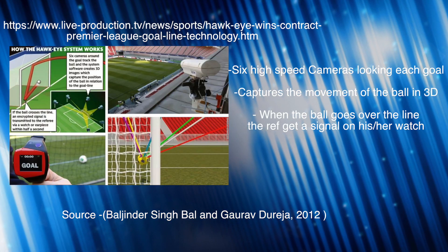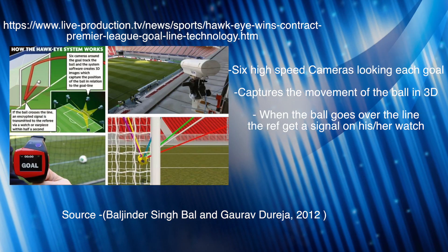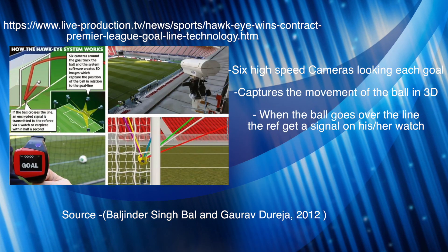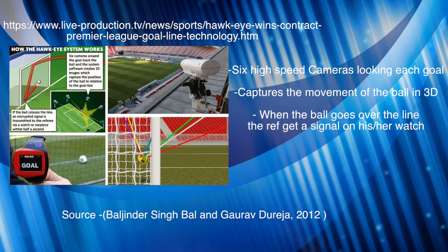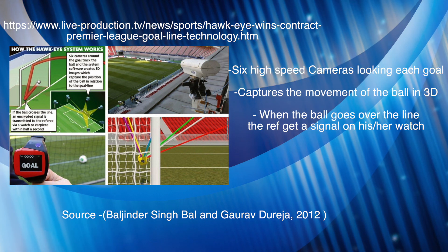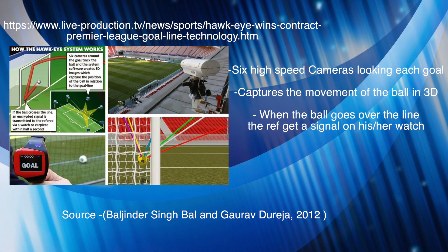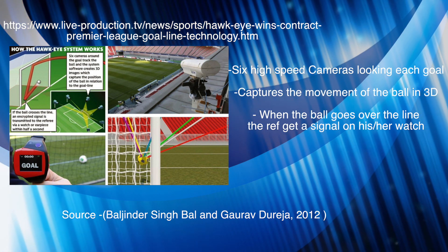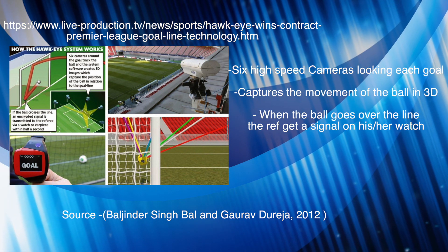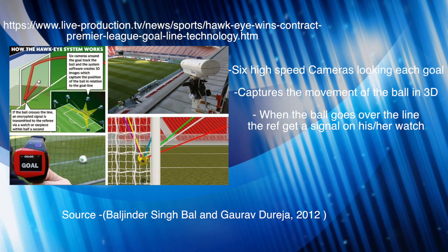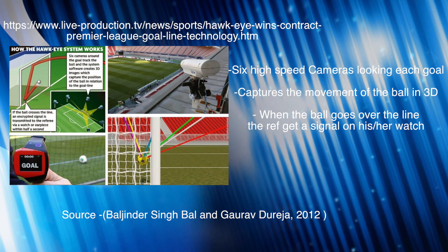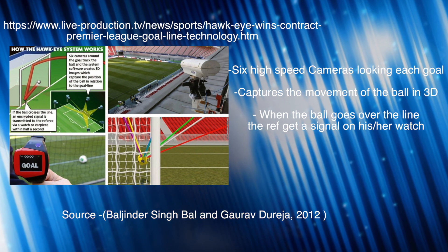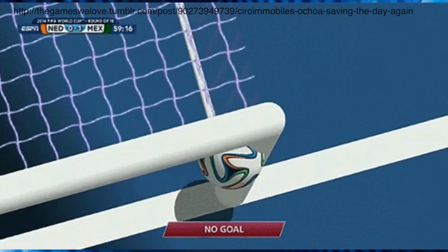Hawkeye is another type of goal line technology. Six high speed cameras look at each goal and keep track of the ball position, which is captured in three dimensions. Then it can tell if the ball has passed the line in seconds. It then sends a signal to the referee's watch telling them if it's a goal or not.